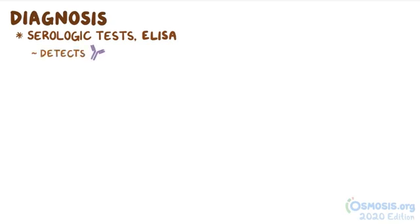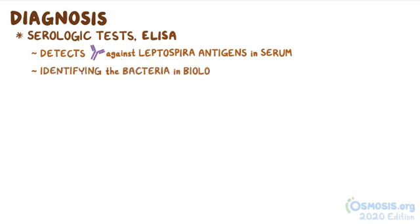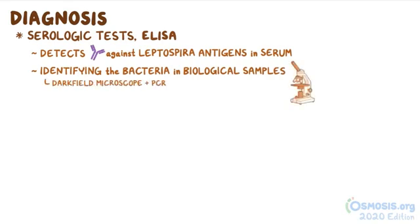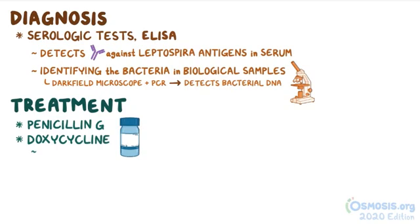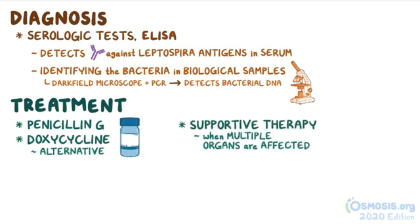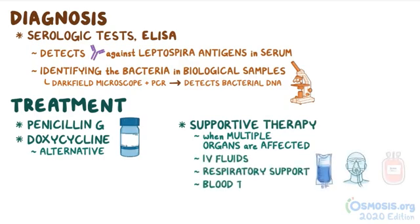Diagnosing leptospirosis is done with serologic tests like ELISA, which typically consists of detecting antibodies against leptospira antigens in one's serum. Another way to diagnose leptospirosis is by identifying the bacteria in biological samples, using a dark field microscope or with PCR that detects bacterial DNA. Leptospirosis is treated with penicillin G, and doxycycline can be used as an alternative. When multiple organs are affected, supportive therapy may be required, like IV fluids, respiratory support, and possibly blood transfusions.